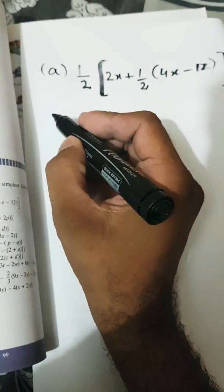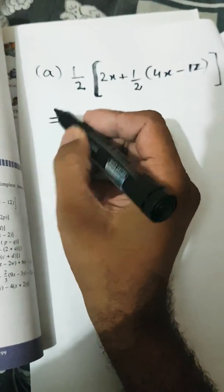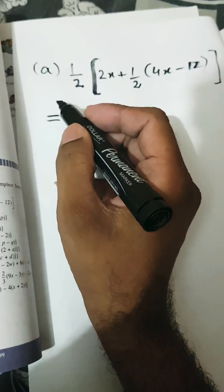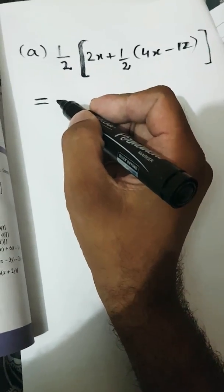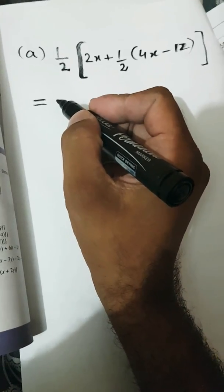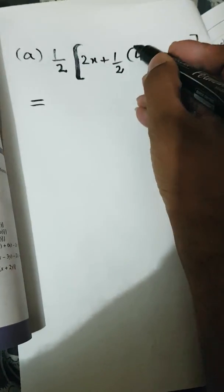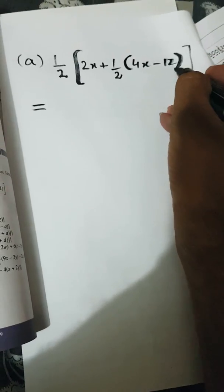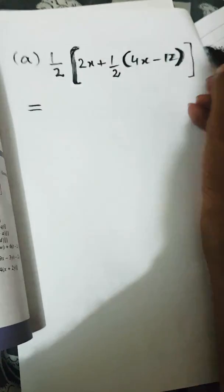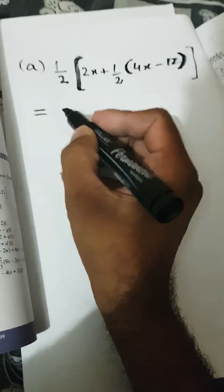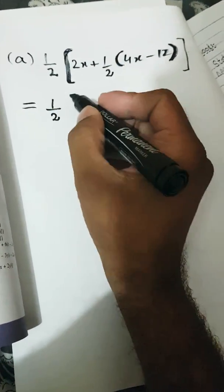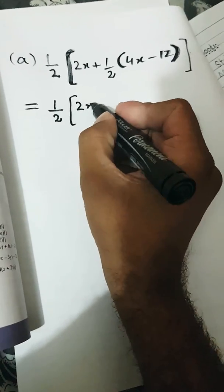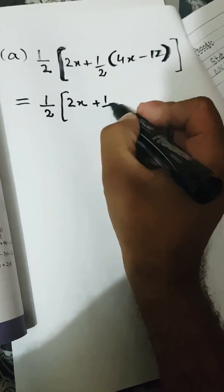First of all, I would like to remind you that you must place an equal sign while solving most questions of algebra. Also, you have to solve the smaller bracket first. This is the smaller bracket and this is the bigger bracket. You will write the other things as they are — 1 over 2 as it is, 2x as it is, and 1 over 2 as it is.